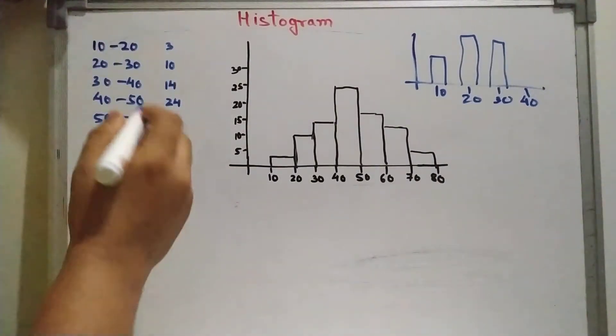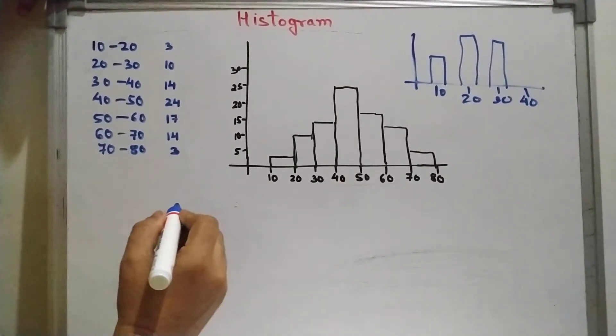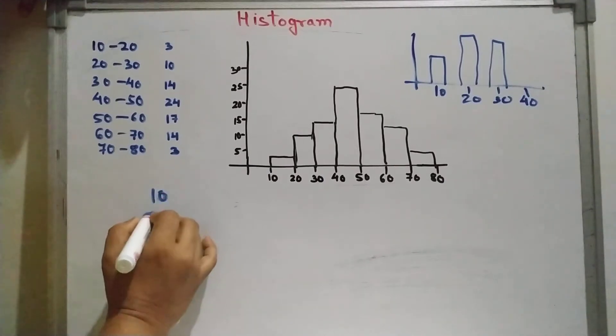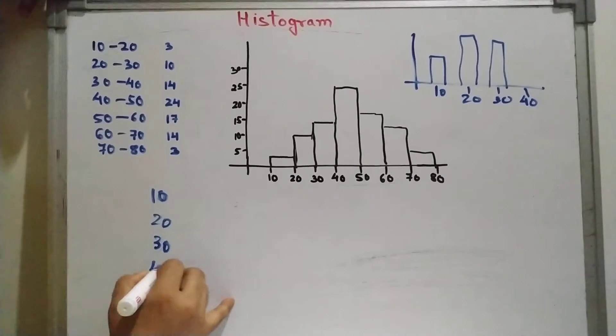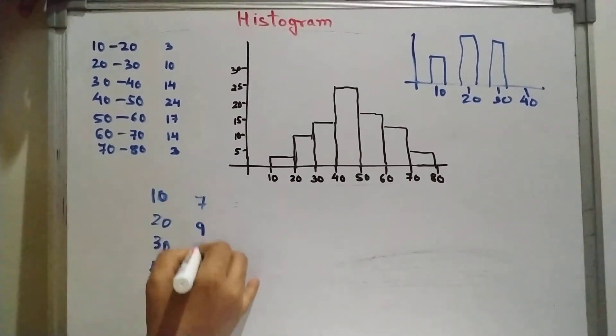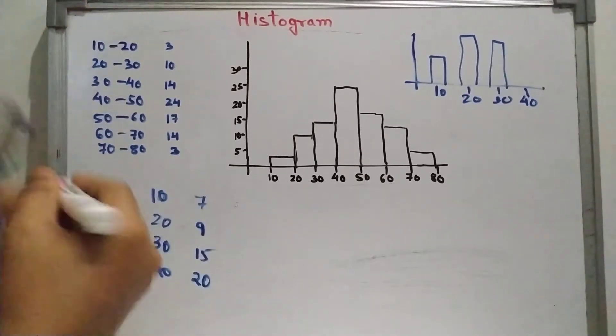One more thing is there. We can also plot histogram for discrete data. For that we need to take the discrete data. Suppose for 10, 20, 30, 40, if the values are suppose 7, 9, 15, 20.